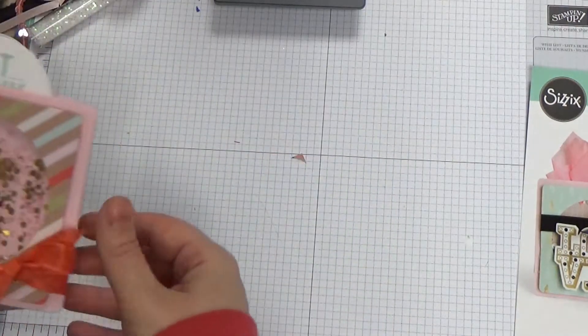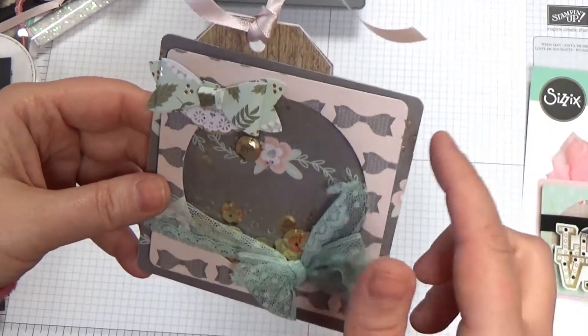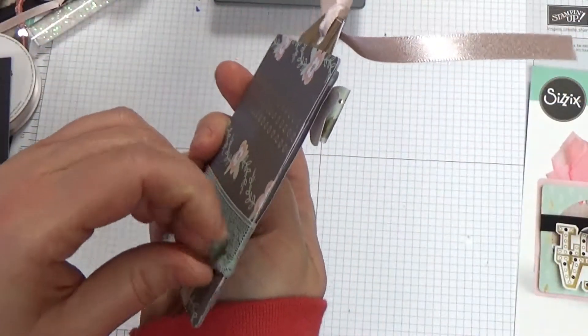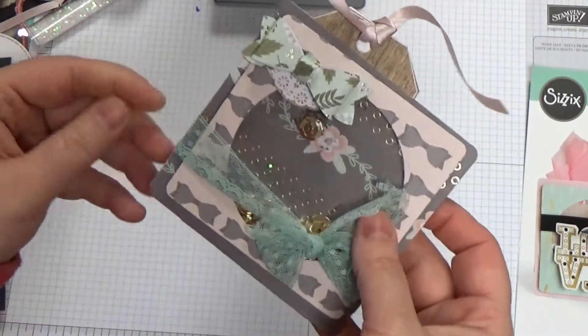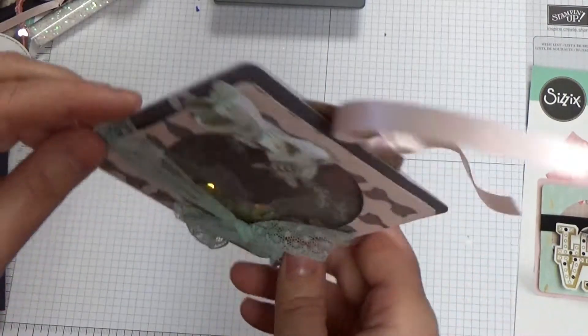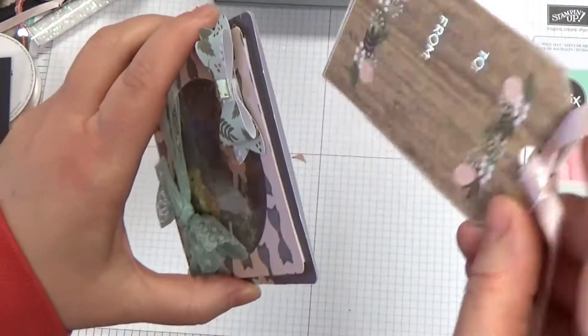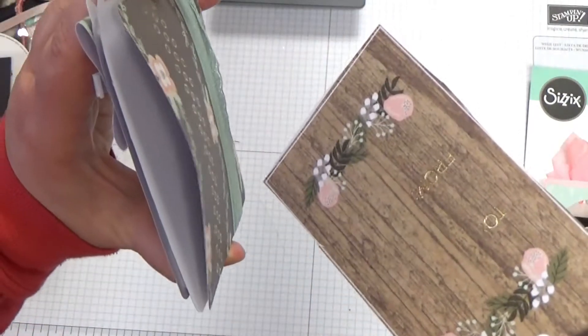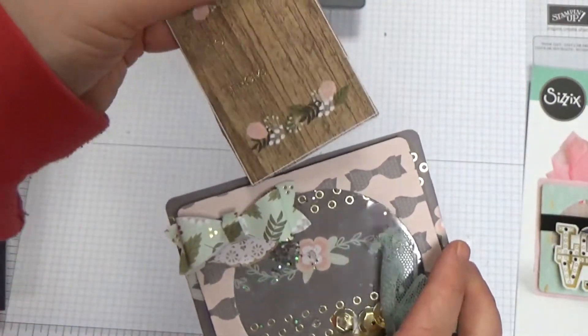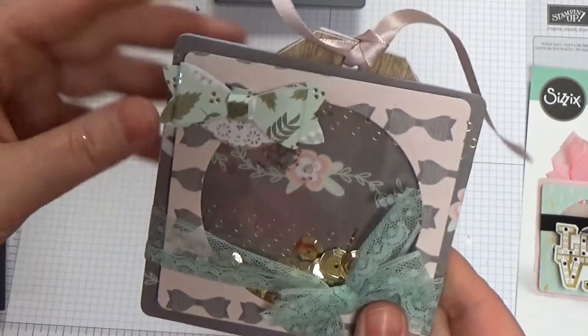I'm going to show you a couple that I've made already and then we're going to make one today. This was the first one I made and I made the back pieces out of pattern paper. So basically I stuck two together and I did the gusset incorrectly because it was the first time, but I made a little tag and you can still stick the tag in there.